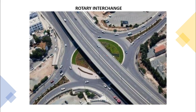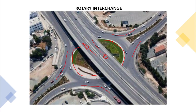A rotary interchange features a rotary, but unlike an at-grade rotary where all roads meet at the same level, here the main road carrying straight-going traffic is elevated, and the other roads — mainly turning traffic — are kept at the lower level.